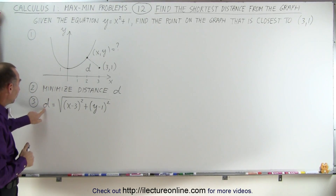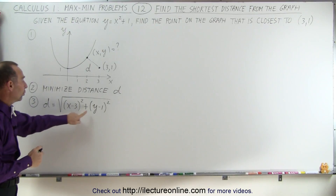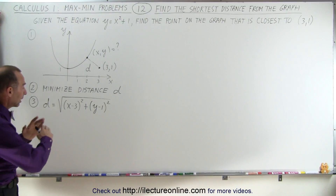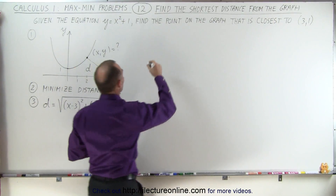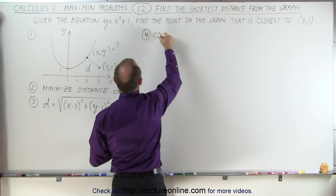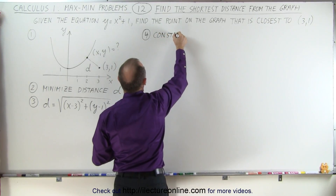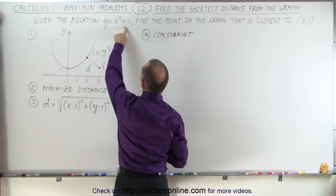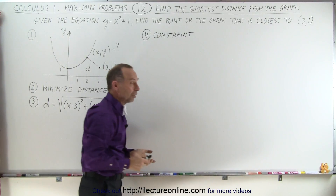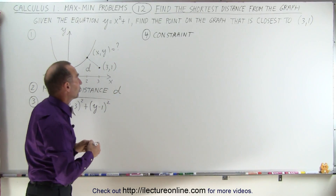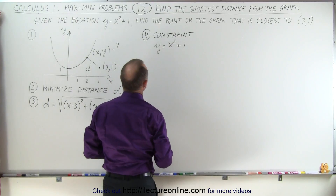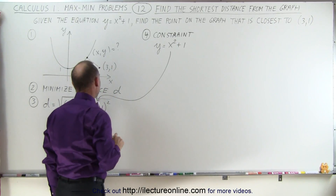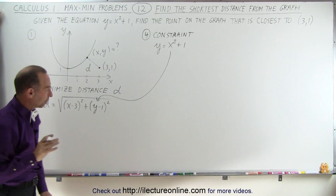Notice that our equation for the distance has two unknown variables, x and y, which means we're going to need a constraint to eliminate one of those variables. Step 4: we need a constraint. The constraint in this case is that the point must be on the graph, which means it must follow y equals x squared plus 1. So y can be replaced by x squared plus 1 in our distance equation.